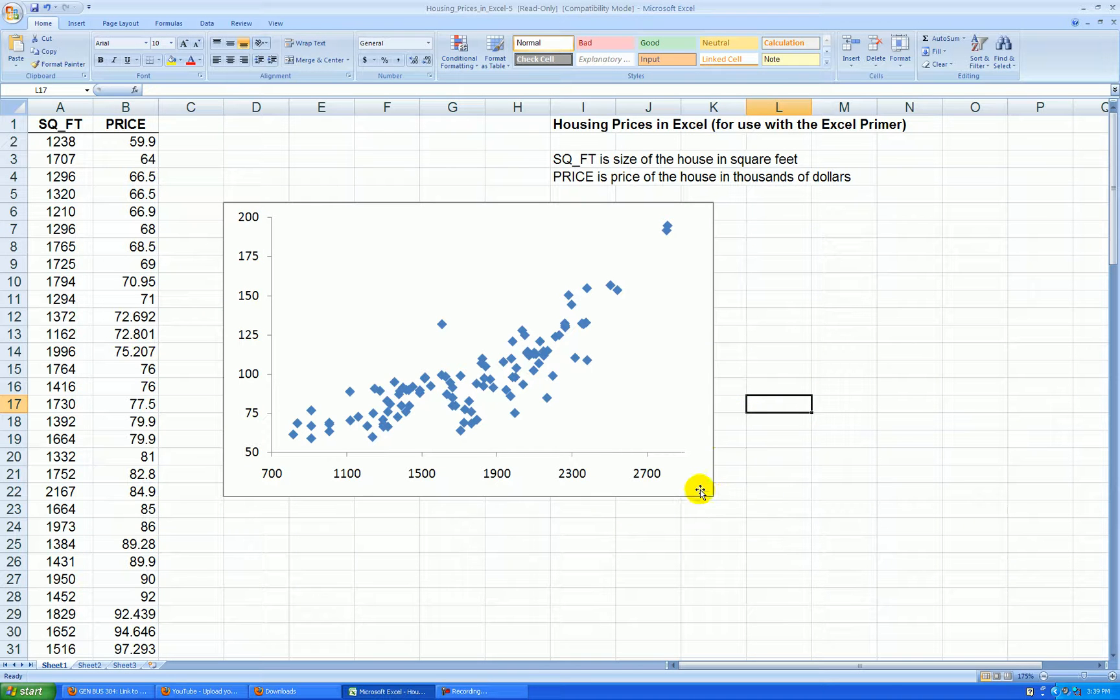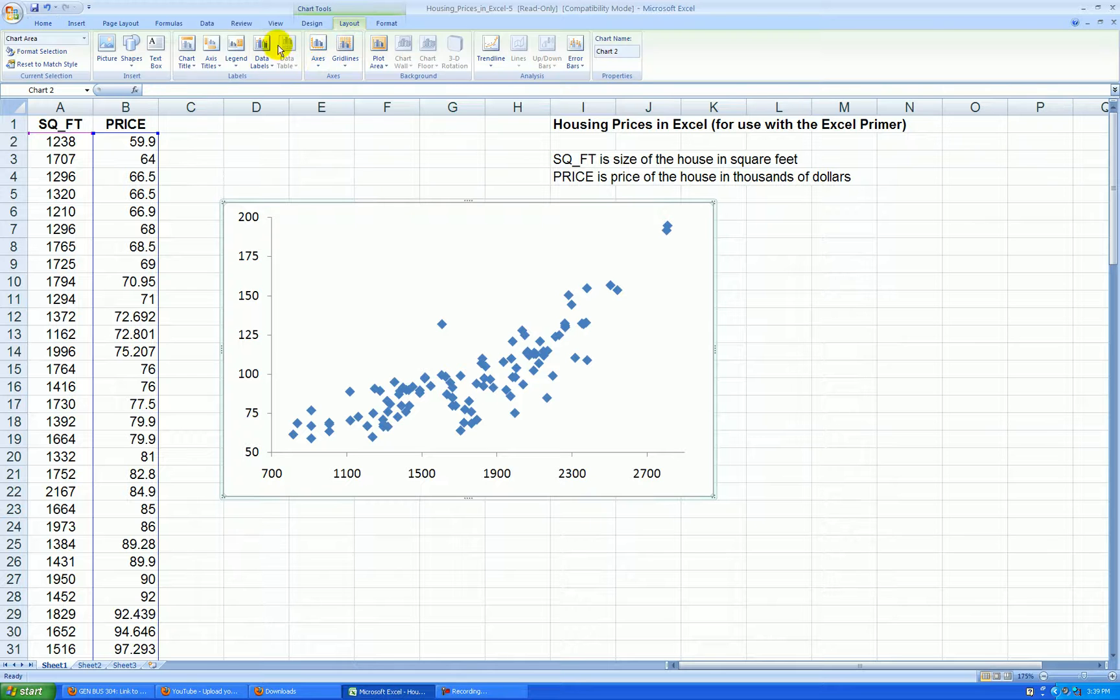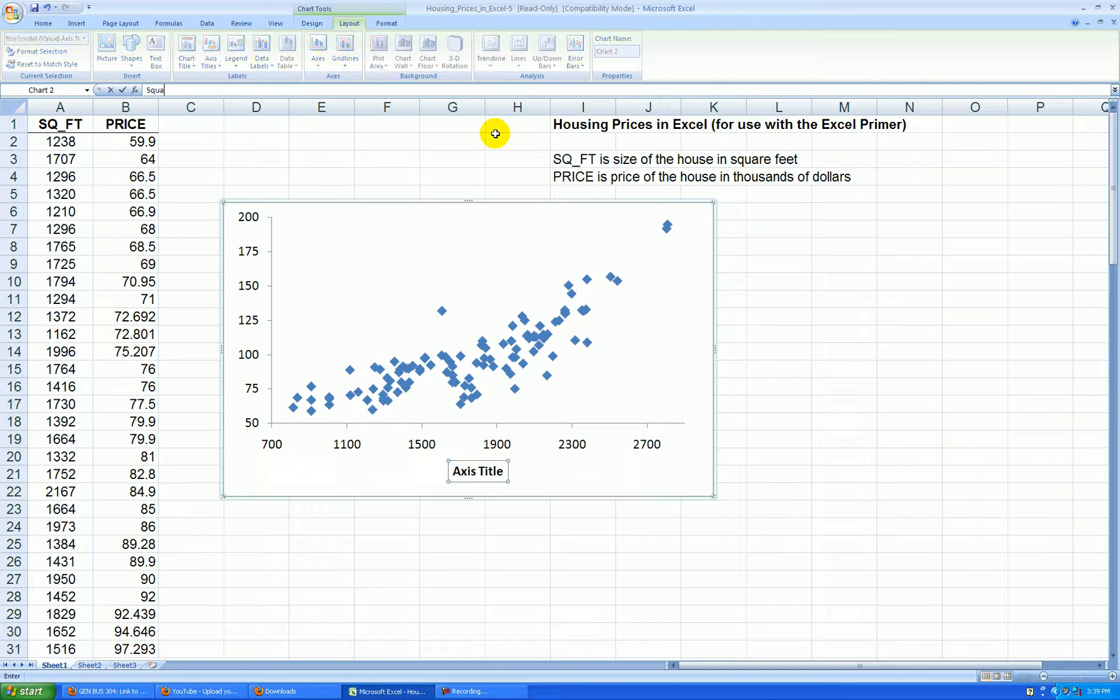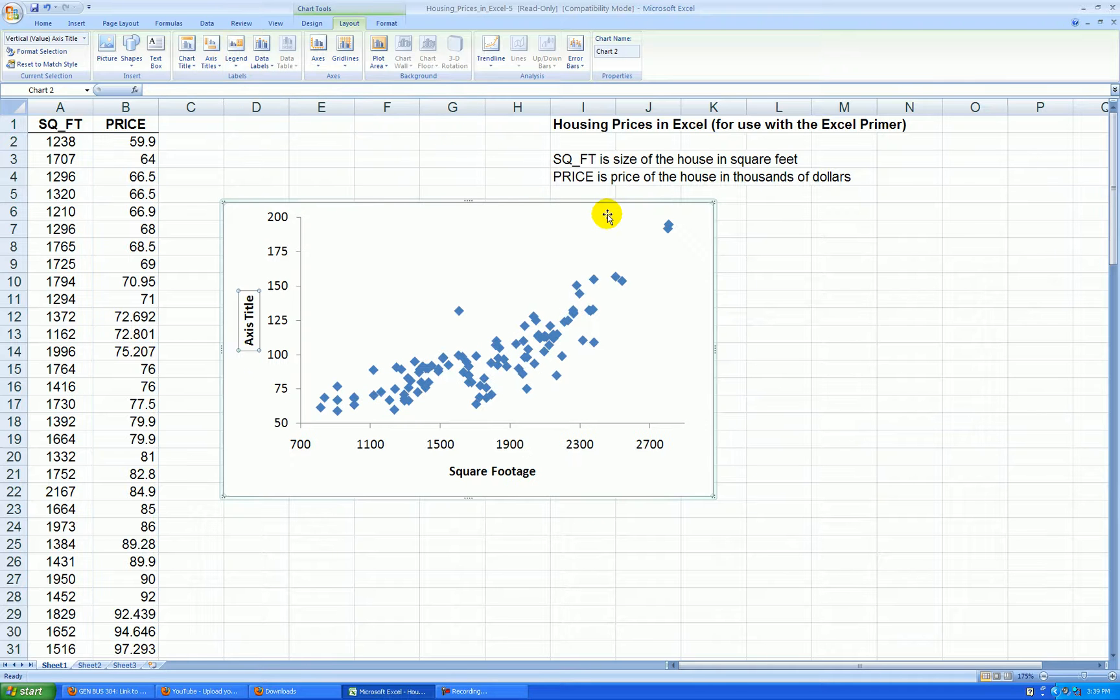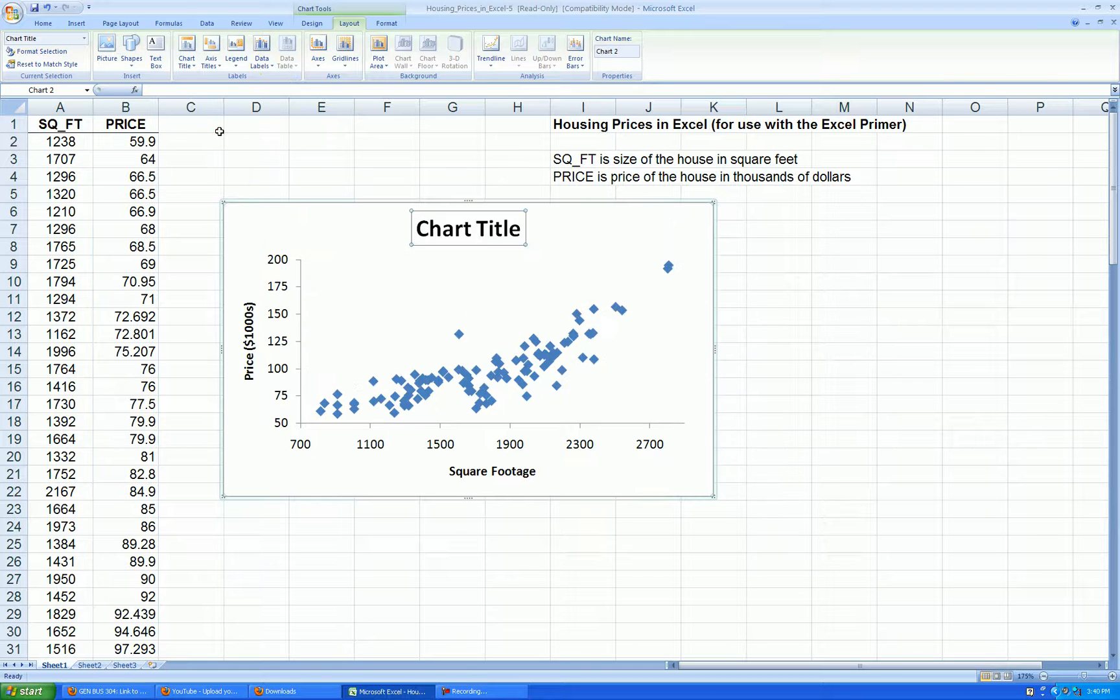Let's add axis labels. Click on the graph. Go to layout, axis titles, horizontal, below the axis. This is square footage. And then for the Y axis titles, vertical, rotated. This is price in thousands of dollars. And we'll add axis chart title above the chart. We'll call this a scatter plot of price versus square footage.